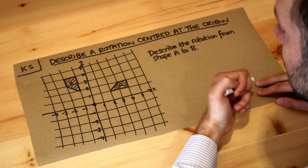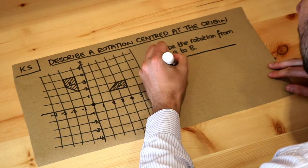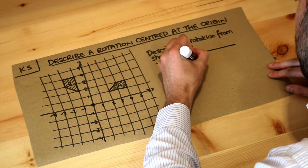There are three things we need to say when we describe a rotation. First, we need to say it's a rotation rather than a reflection, translation, or enlargement.